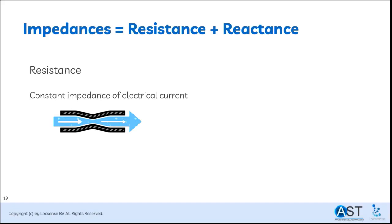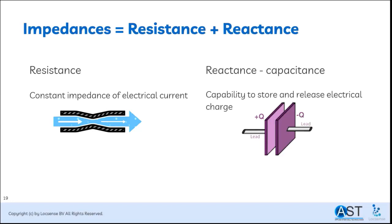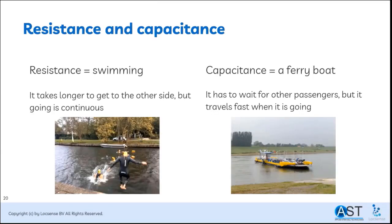TEER can be extracted from the impedance data, but total impedance is more than only TEER — it is the sum of the resistors and the reactances. Resistance is constant and always increases the total impedance. The most important reactance found in a biological cell layer is capacitance. A capacitance can hold and release electrical charge, and whether this impedes or facilitates the electrical current is dependent on the frequency. A resistance can be compared with swimming — it takes longer to get to the other side, but going is continuous. A capacitance can be compared to a ferry — you might have to wait, but once it takes off, it's traveling fast.